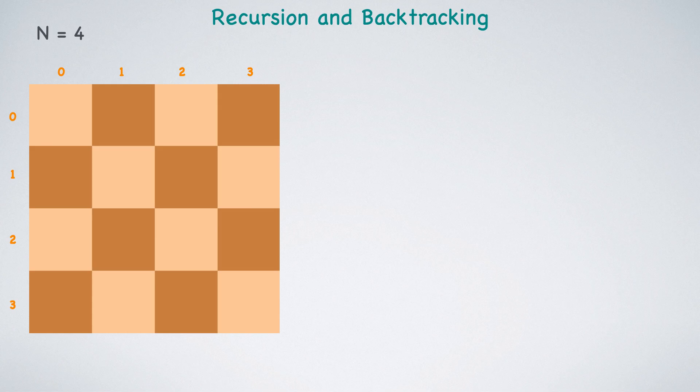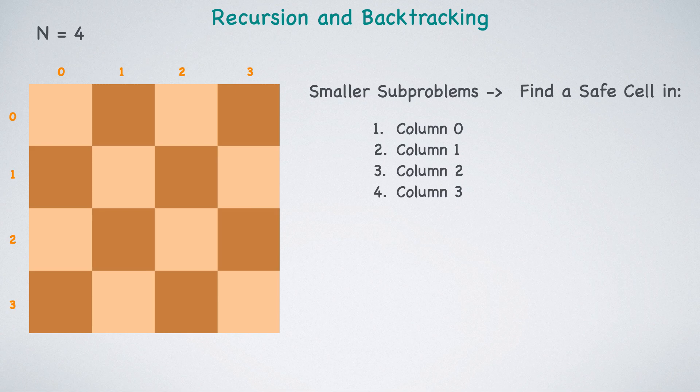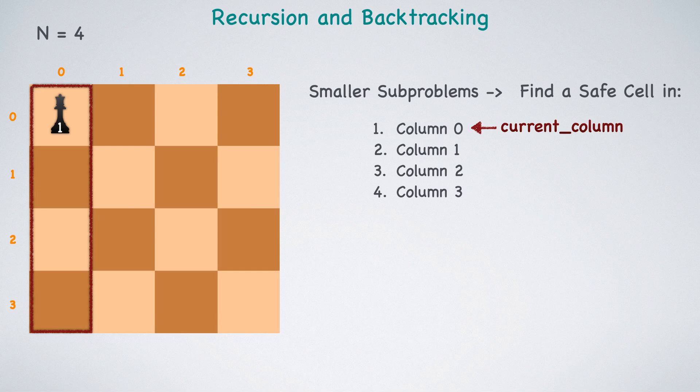To frame this as a recursive problem, we break it down into smaller sub-problems. That is, to find a safe cell in column 0 followed by column 1, 2 and 3. So, we actually have four sub-problems. We will initially attempt to place the first queen in the first column starting at row 0 and column 0. After successfully placing it, we will recursively solve the problem for the second column.